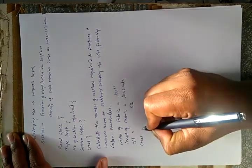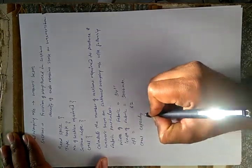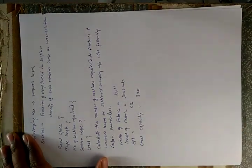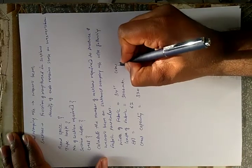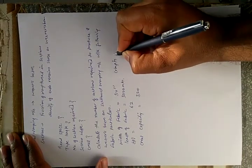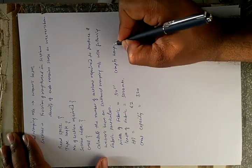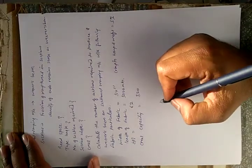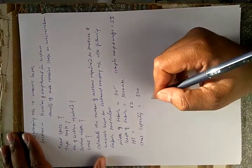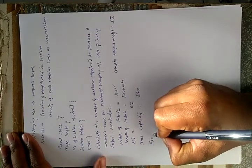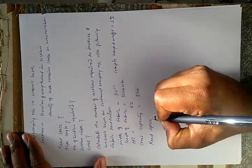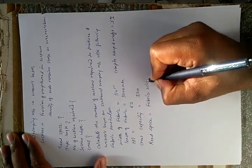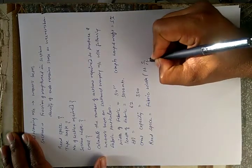Creel capacity = 320, crimp = 5%. By these particulars, we now have to calculate the read space. As you all know, the formula is: fabric width multiplied by (1 + crimp/100).